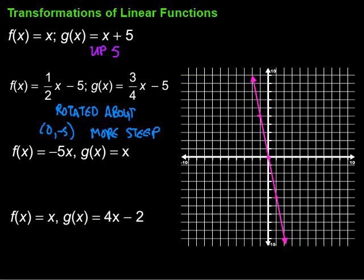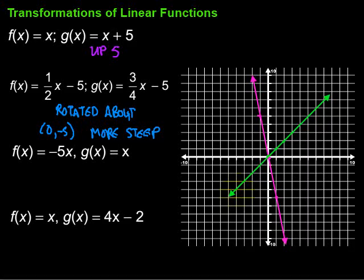The next one is g of x equals x. We did that one earlier — the intercept is at zero and the slope is 1, so up 1 over 1 repeatedly, or down 1 to the left 1. After sketching that line, we compare the two: this line is less steep than the first one.